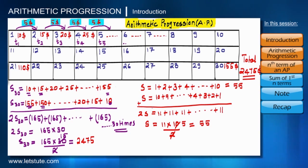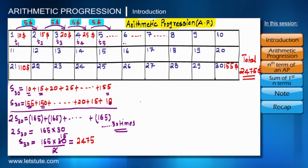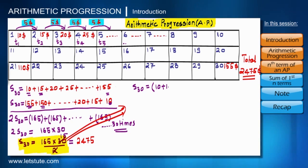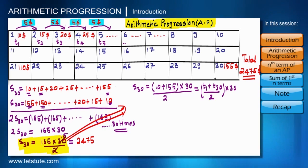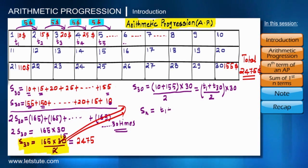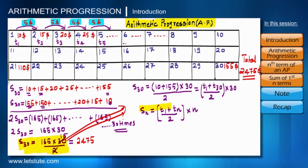We can generalize this. S30 = (10 + 155) × 30 / 2, where 10 is the first term and 155 is the last term t30. The general formula is: Sn = (t1 + tn) / 2 × n. Using this expression we can find the summation of any arithmetic series.